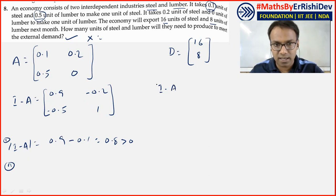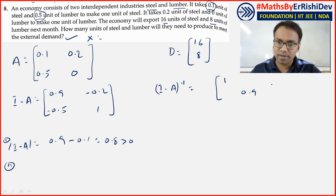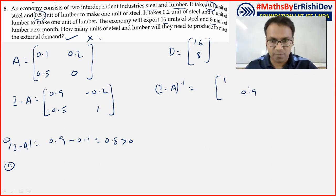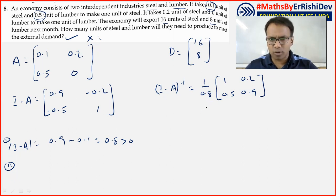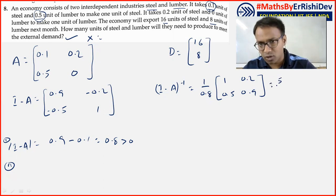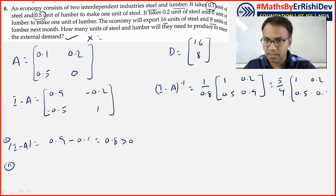Finding the inverse of I minus A: adjoint — interchange diagonal elements: 1 and 0.9 swap; change signs of off-diagonal elements: 0.2 and 0.5. Divide by the determinant value 0.8, which equals 10/8 = 5/4. So (I-A) inverse = (5/4) × adjoint matrix.